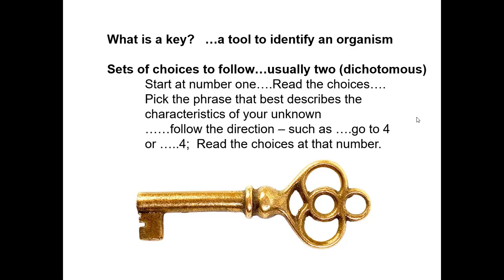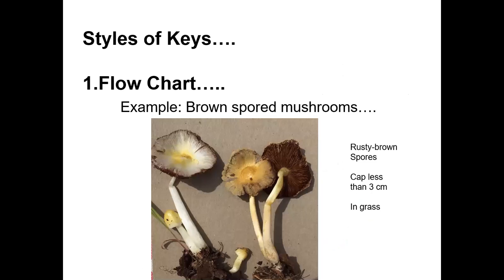We are now going to look at the unknown organism that goes with the brown spore page that you printed out. So if you've got a flow chart in front of you for brown spore mushrooms, this is how it's going to work. I've shown you a picture and given you some descriptions on the side of that picture. You're going to start at the top of the brown spore page, and in this case your choices are shown by arrows.